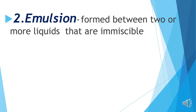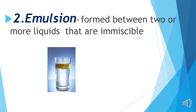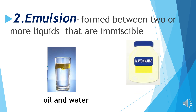Number two: Emulsion. Emulsion is formed between two or more liquids that are immiscible — that means they cannot mix or blend together. Like oil and water, and another example is mayonnaise.